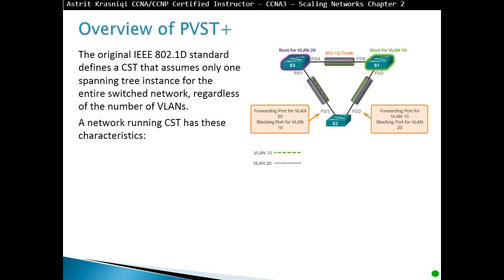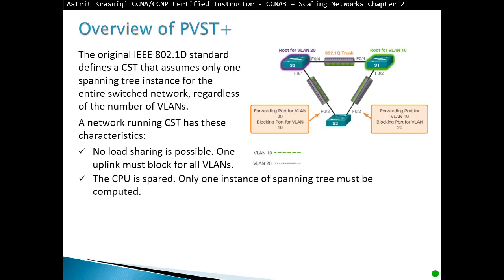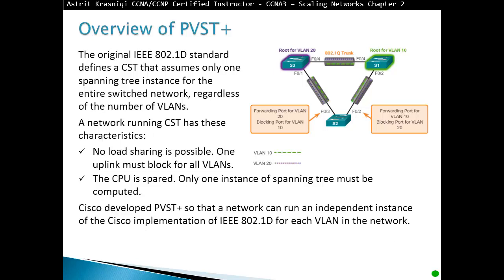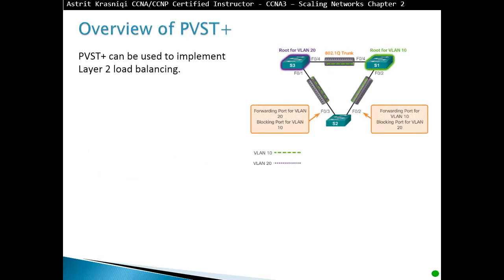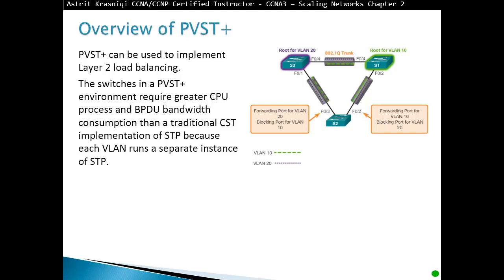A network running Common Spanning Tree has these characteristics: no load sharing is possible; one uplink must be blocked at all times; the CPU is spared because only one instance of Spanning Tree must be computed. Cisco developed Per-VLAN Spanning Tree Plus so that a network can run an independent instance of IEEE 802.1D for each VLAN. With PVST+, one trunk port on a switch can be blocking for one VLAN while forwarding for another.